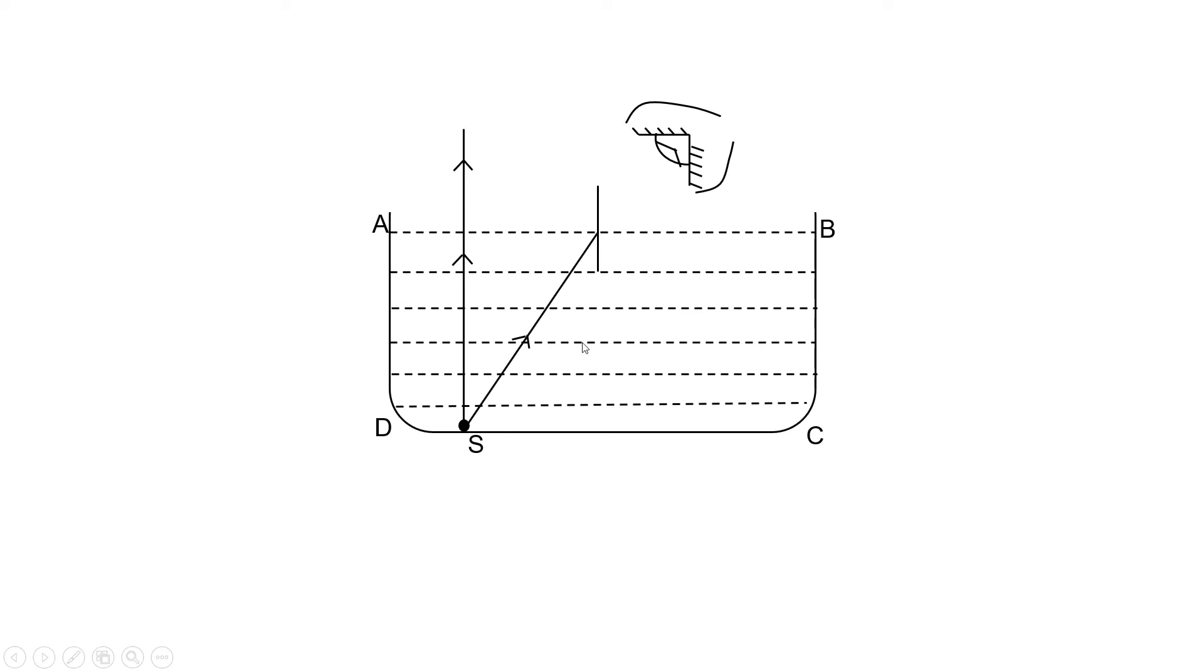But another ray of light which makes a certain angle with the normal bends away from the normal. Because of this bending, the person wouldn't be able to see that object at S. It can be seen at another place, S dash.